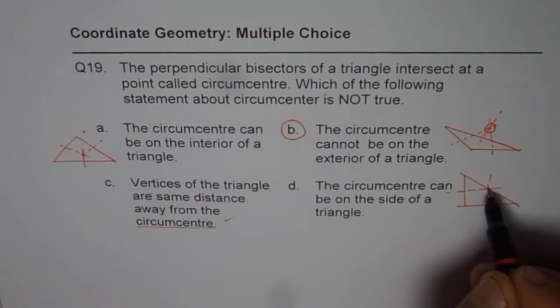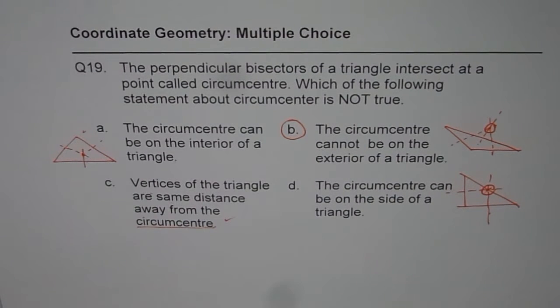This right bisector will be there. So clearly you have the answer, right? So that is the point, which is the circumcenter, same distance away from the three vertices, right?